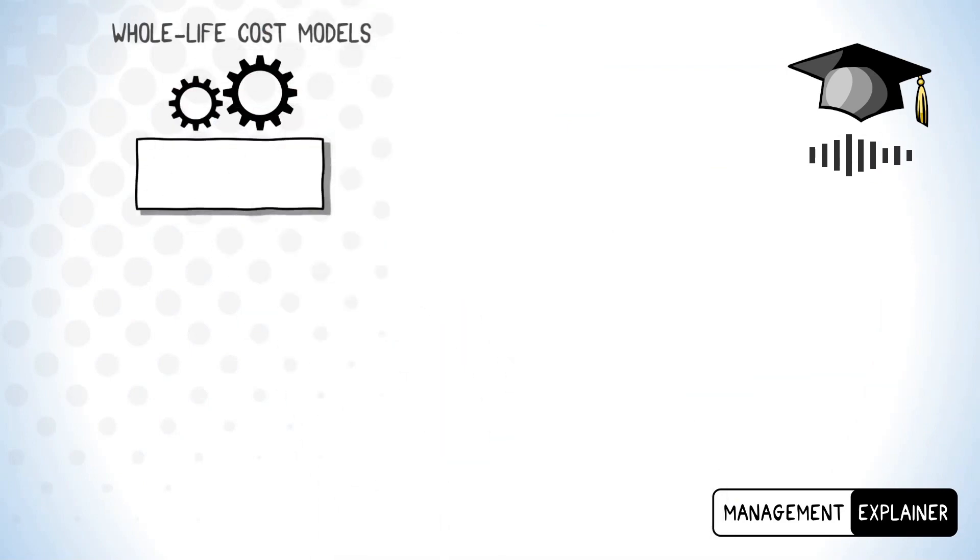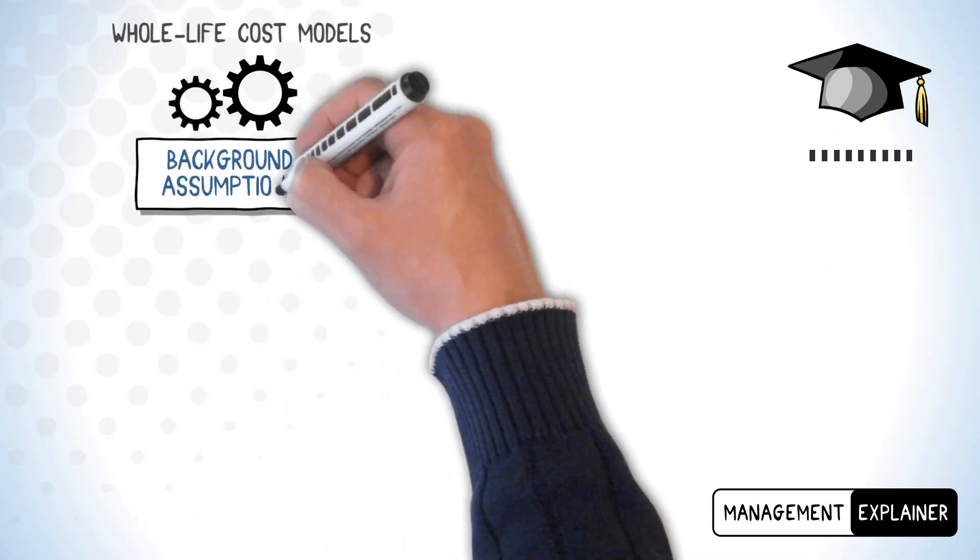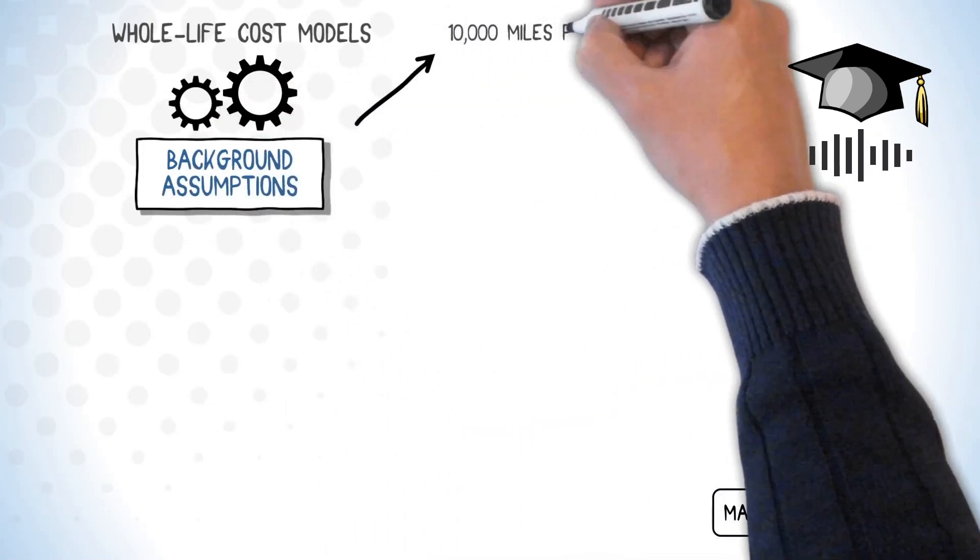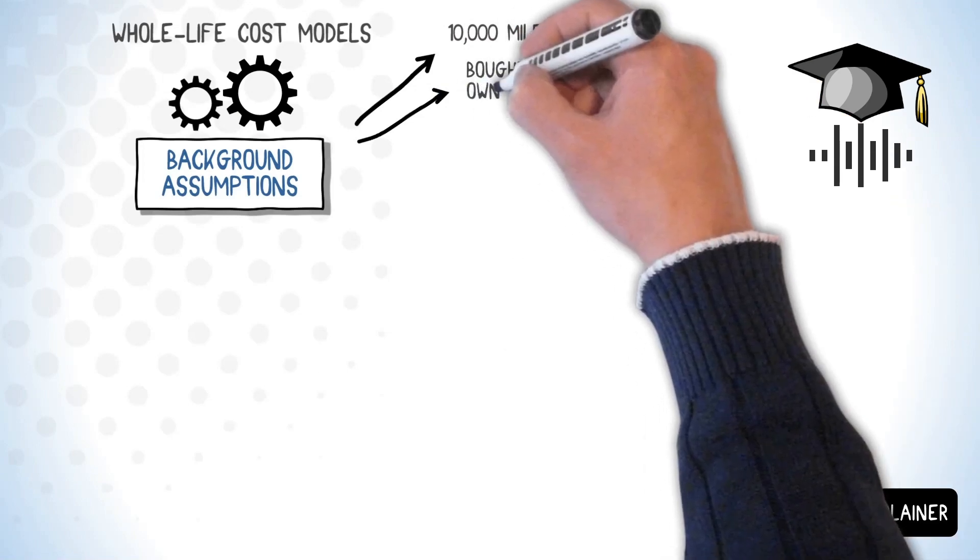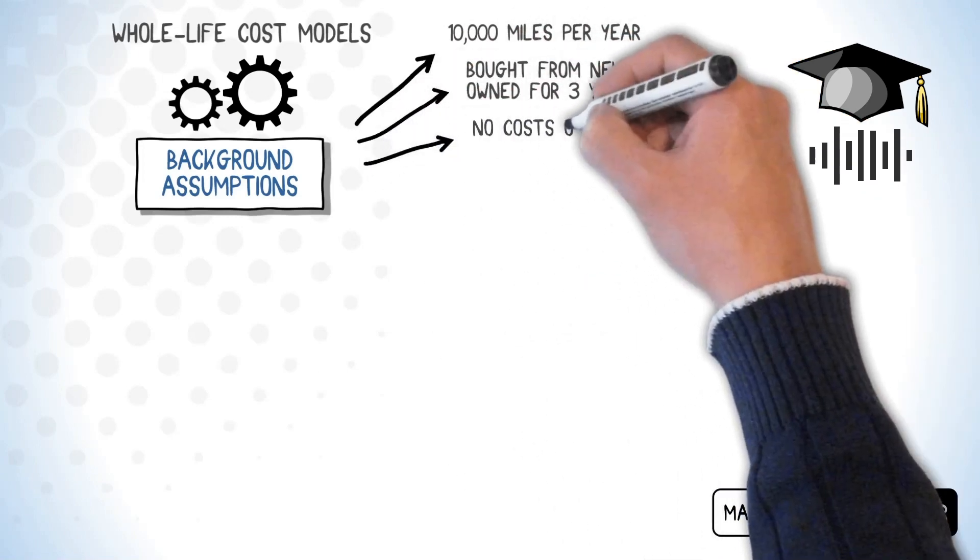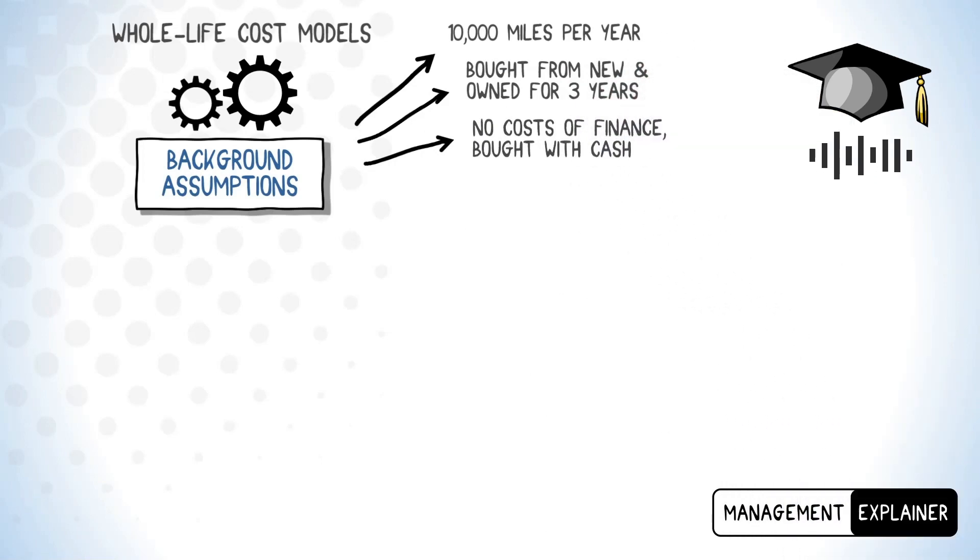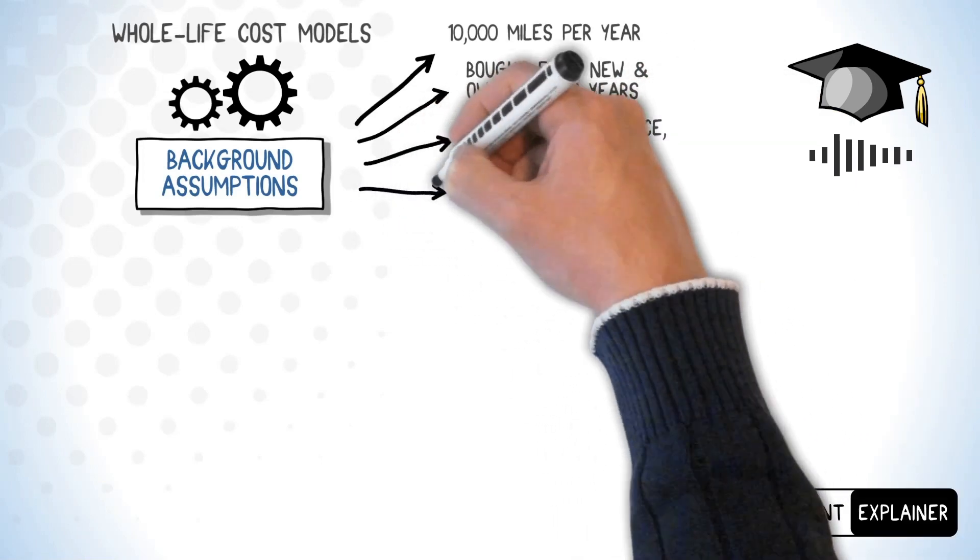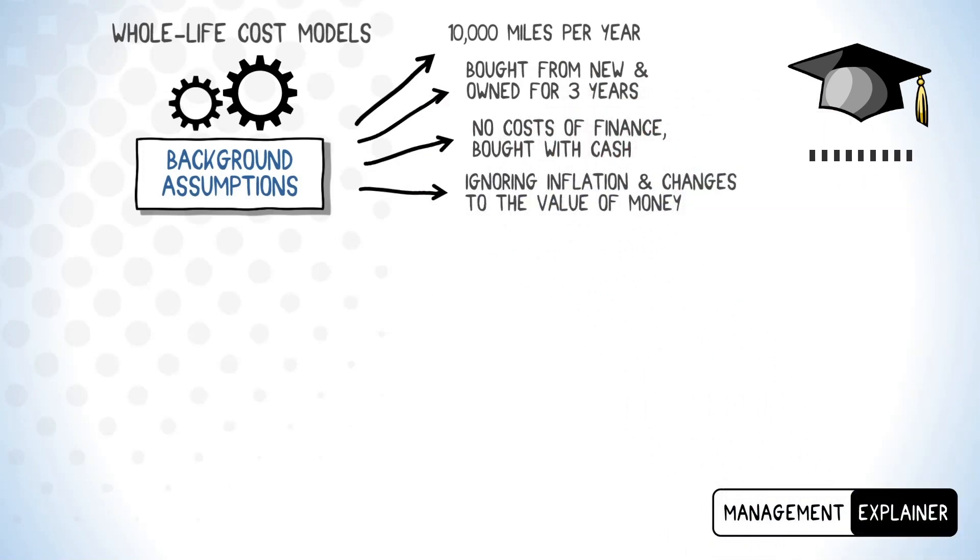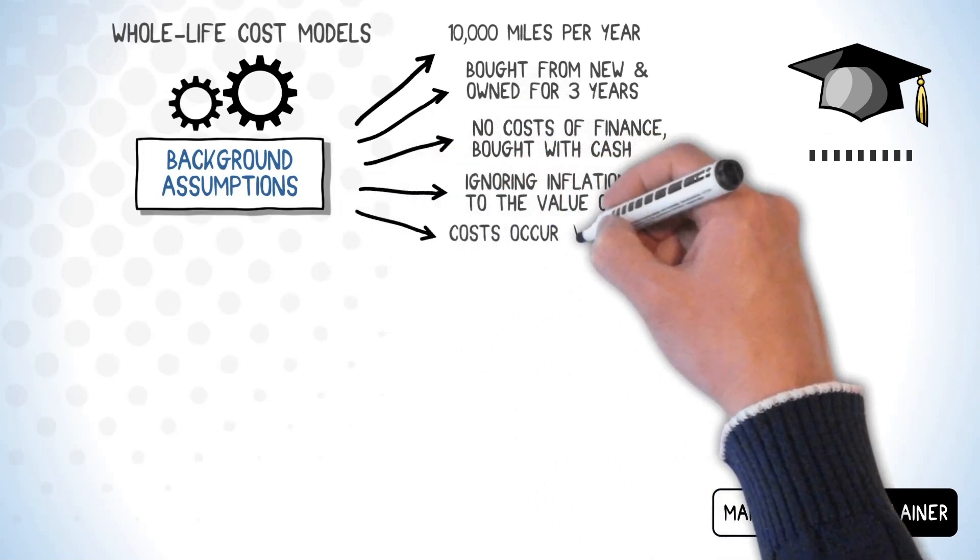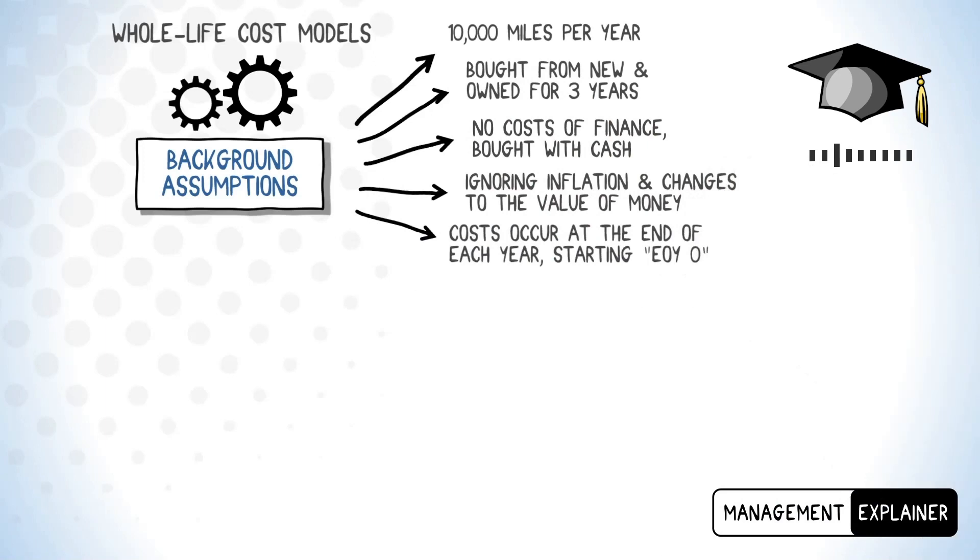Before we can put together the model, we need to state a number of background assumptions. In this model we'll drive the car around 10,000 miles per year, which is considered quite light usage. The car is bought new and we'll own it for three years. We don't have any costs of finance, so assuming that the car is simply bought with available cash. We're also ignoring inflation and we're not interested in changes in the relative value of money over time. Additionally, we assume that all costs occur only once at the end of each year, starting with the present we'll call end of year zero.